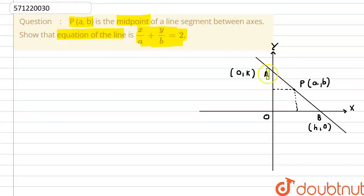So here this is the diagram, these are the coordinate axes. And this is the point P, that is the midpoint of this line segment between the axes. So A and B are the points where the line cuts the axes. And we have assumed it to be A and point B.